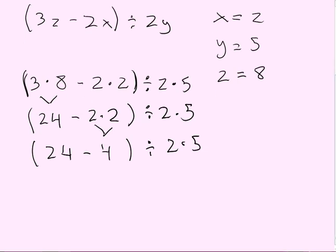Okay, so now we still have a parenthesis, so we have to do the stuff inside the parenthesis before we do this multiplication on the side. And so, 24 minus 4 is 20. Now, we want to put parenthesis around that, because it's only one number.